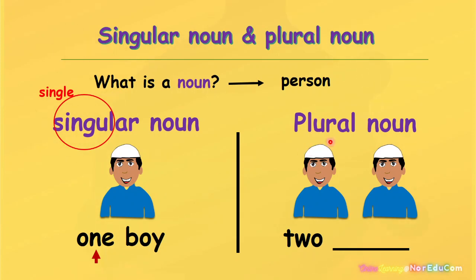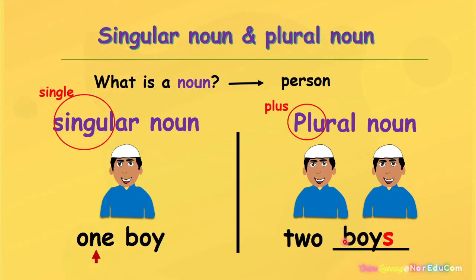What about the plural noun? The plural noun means plus. It means that there is more than one. We need to add S to make a plural noun. One boy, two boys.